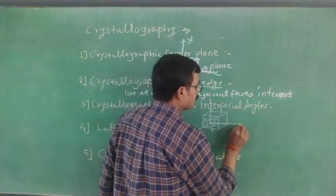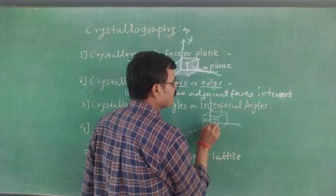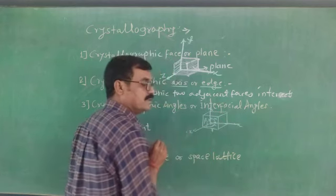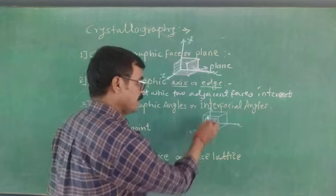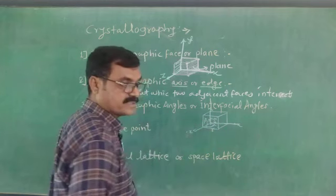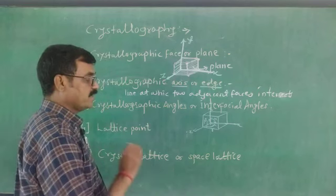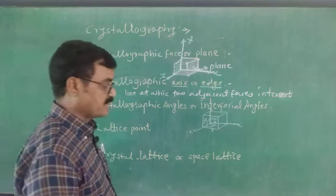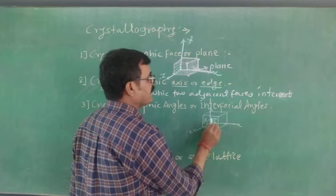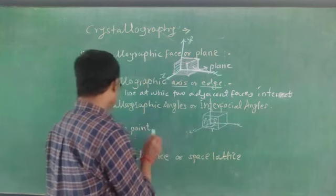Here, between two faces, the angle alpha is formed. Between Y and Z, this is beta. Between Z and X, this is gamma. These are different for different crystalline substances. For a cubic system, all interfacial angles are 90 degrees — alpha = beta = gamma = 90°.